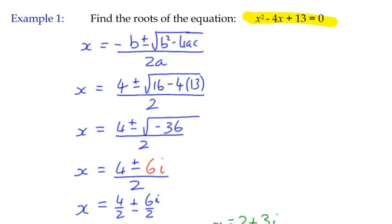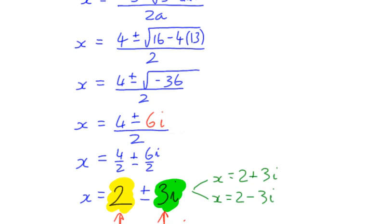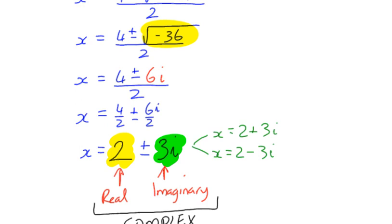So we used a quadratic formula to solve it. We got to what would have been a sticky point, which would be the square root of negative 36, but we introduced the idea of an imaginary number such that we could make our complex solution or complex root. We've got two of them, in fact. One is 2 plus 3i and the other is 2 minus 3i.